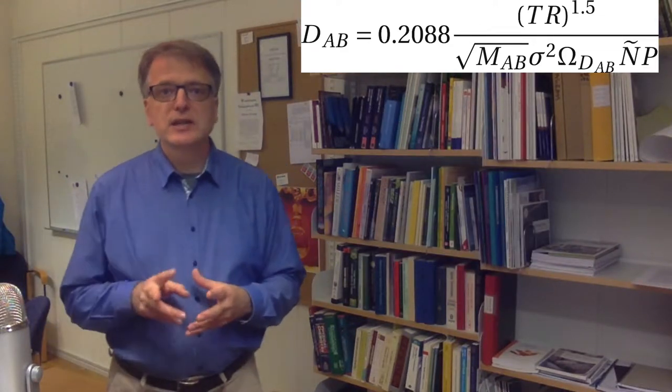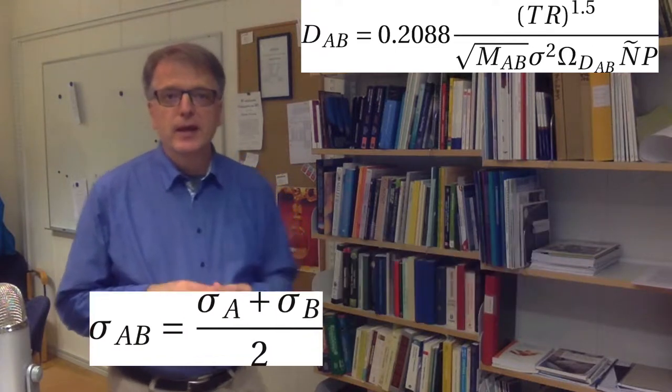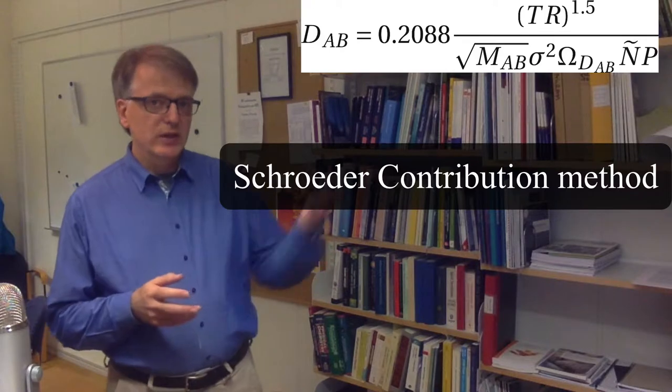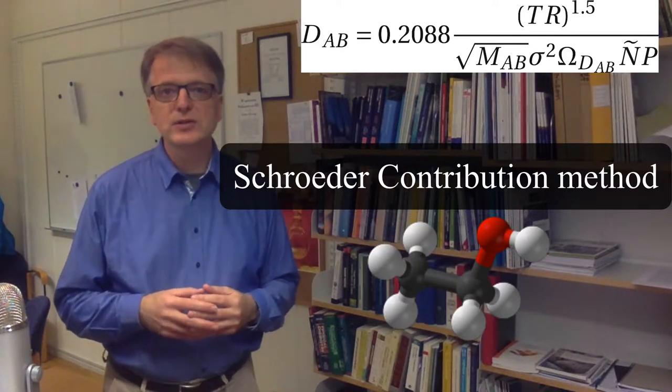What about the characteristic collision diameter? You can use the Schroeder contribution method. What you do then is to look at the molecule and say that here is an ethanol molecule, for example.